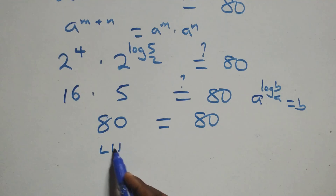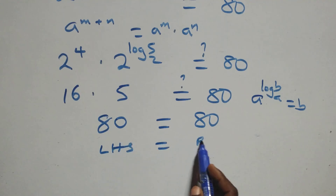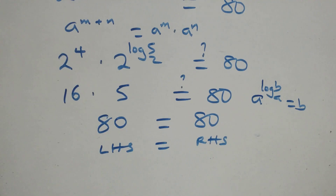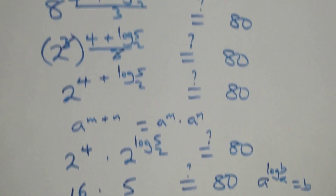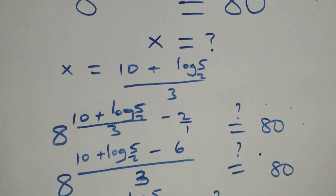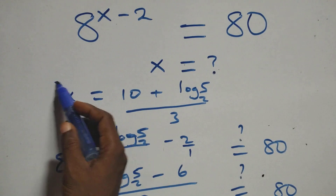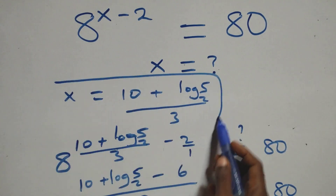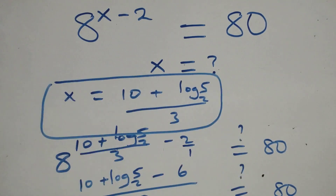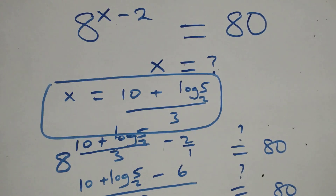We have left-hand side equals right-hand side. Therefore, we conclude that x equals (10 + log₂ 5) all over 3 satisfies the given problem. Thank you for watching. Don't forget to subscribe for more videos and turn the notification bell on. Share this video, give it a thumbs up, and put your comments. See you next time.